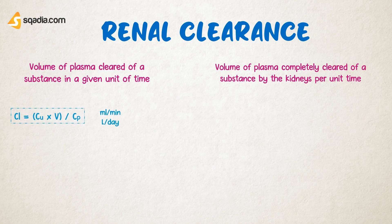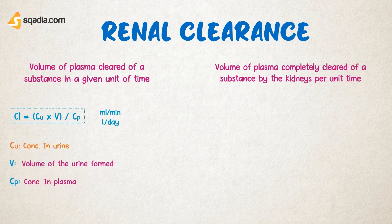This equation can be used to calculate renal clearance, where Cu shows the concentration of the substance in urine, V is the volume of urine passed per minute, and Cp shows the concentration of the substance in the plasma.